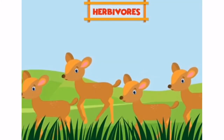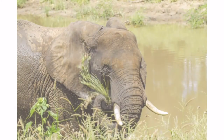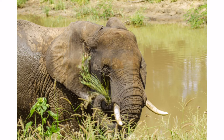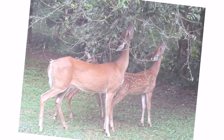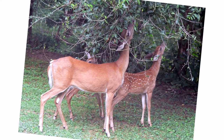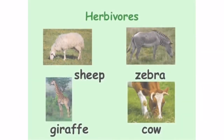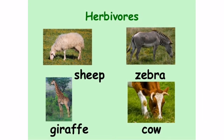They generally have eyes on the sides of their heads, which allow them to have a wider field of vision, allowing them to see all around without even moving their heads. Examples include an elephant eating grass and deer eating leaves. Some examples of herbivores are zebras, sheep, giraffe, and cow.